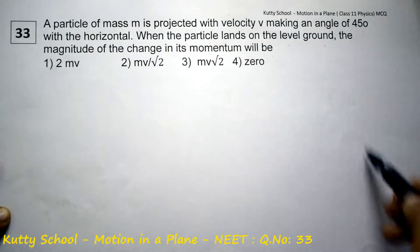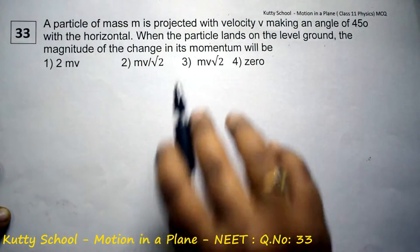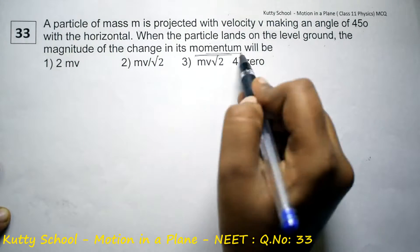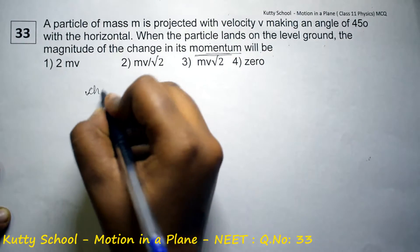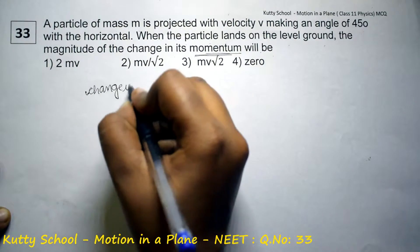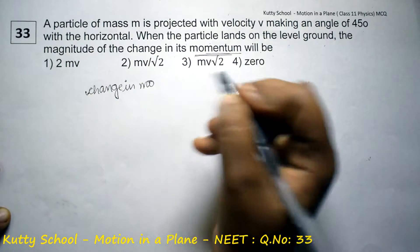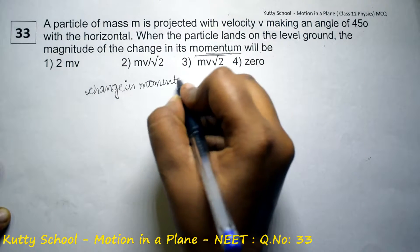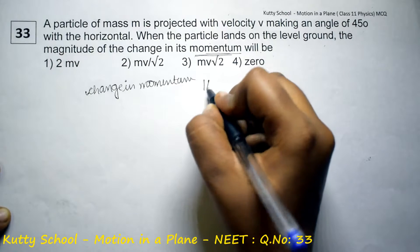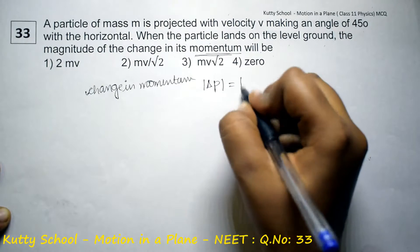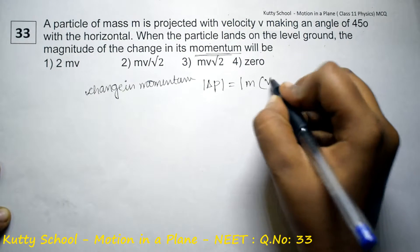The magnitude of change in momentum. So the change in momentum formula: modulus of Δp equals modulus of m into (v minus u).